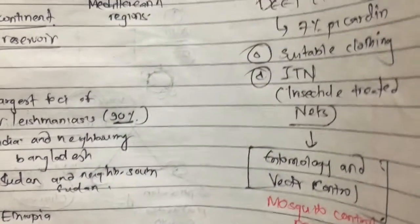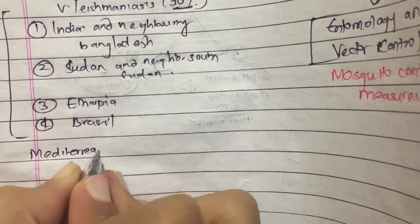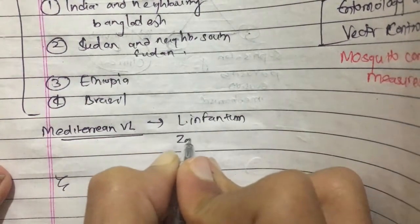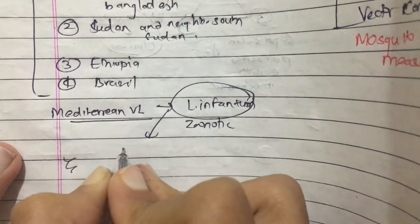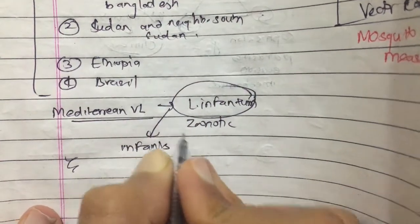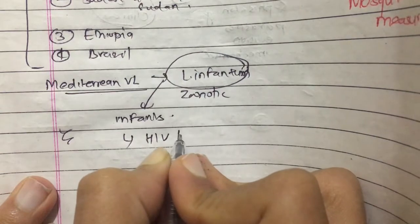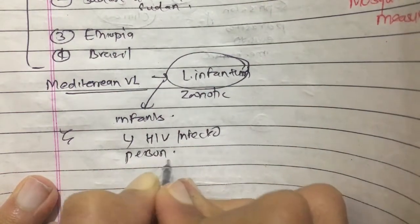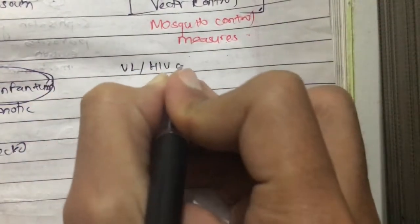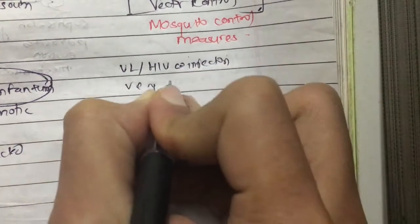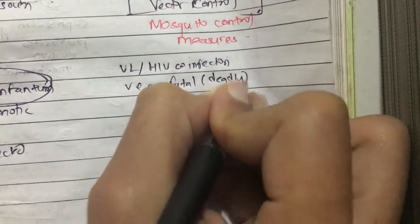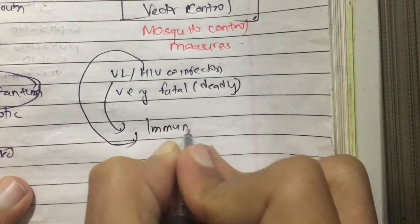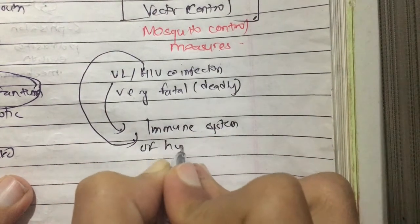Mediterranean visceral leishmaniasis is mostly caused by Leishmania infantum and is a zoonotic infection. It was called Leishmania infantum because it previously caused infection in infants, but nowadays it causes infection in HIV-infected persons. Visceral leishmaniasis and HIV co-infection is very fatal because both infections affect the immune system of the human host.